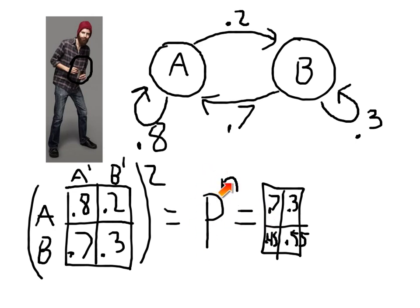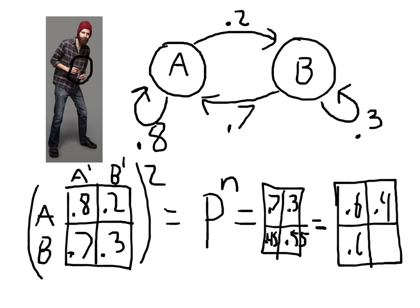Now, let's think about this. What if I set n to 100? What do you think the values might be? Well, the values, if I raise this to the hundredth, if I, after 100 days, it actually is going to be 0.6, 0.4, 0.6, 0.4. And if I did 1,000 days, it would be the same thing. If I did 10,000 days, it would be the same thing. And you go and try this on your computer.